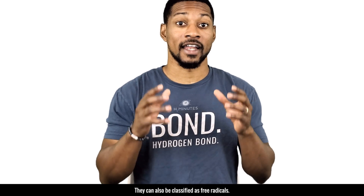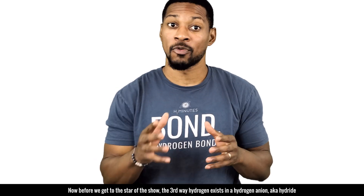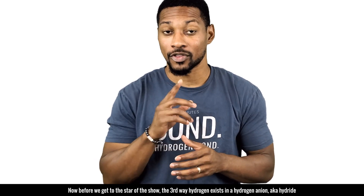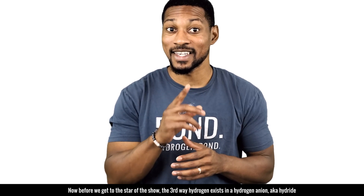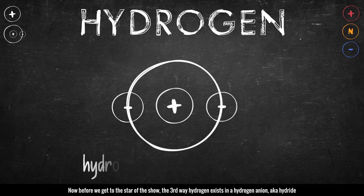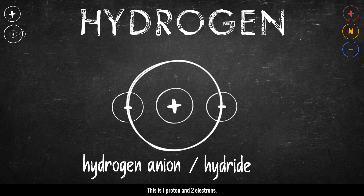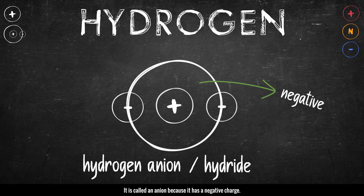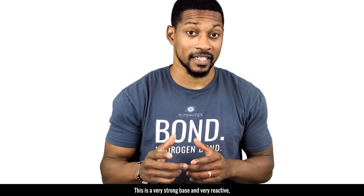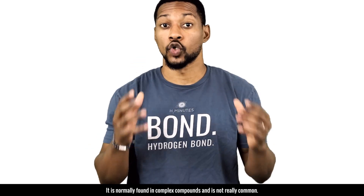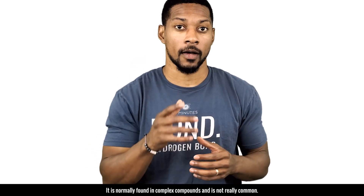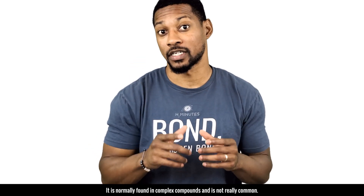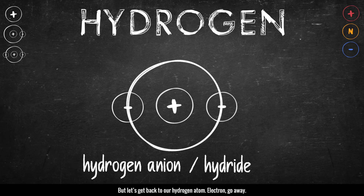They can also be classified as free radicals. The third way hydrogen exists is a hydrogen anion, also known as hydride. This is one proton and two electrons. It is called an anion because it has a negative charge. This is a very strong base and very reactive. It is normally found in complex compounds and is not really common.